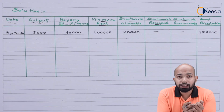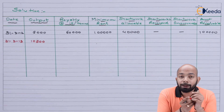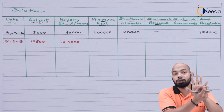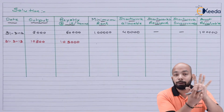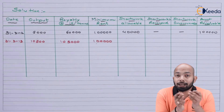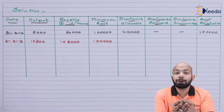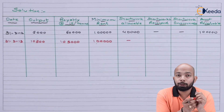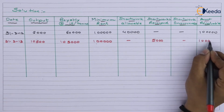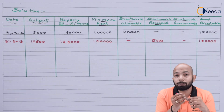For 31st March 2013, the output is 10,500 tons multiplied by ₹10 gives ₹1,05,000. The minimum rent is ₹1 lakh, and ₹5,000 can be adjusted against prior short workings. There is no new short working here since royalty exceeds minimum rent. Nothing goes irrecoverable as this is the second year. The amount receivable from the lessee is ₹1 lakh.